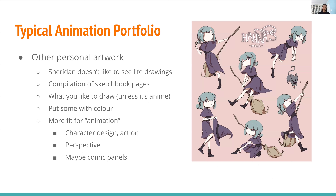For other personal work, for Sheridan Animation specifically, they don't like to see more life drawings since you already have a lot. You could do a compilation of sketchbook pages, and they really want to see what you like to draw — unless it's anime, they don't like anime. Since the rest of the portfolio requirements are all black and white, it'd be really nice to put some color. You should build it to be more fit for animation, such as character design, character actions, maybe some perspective, or comic panels if you do that.